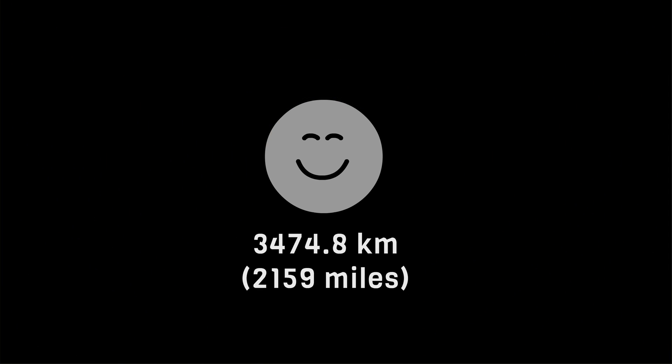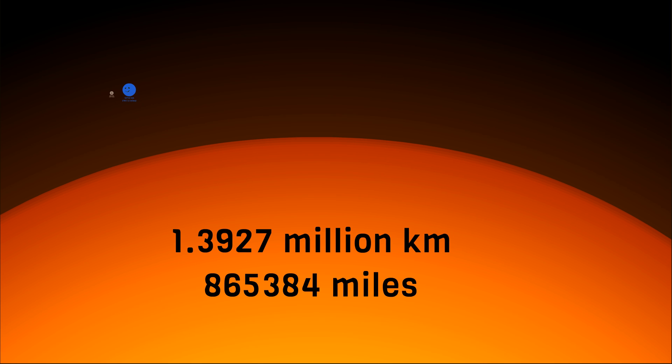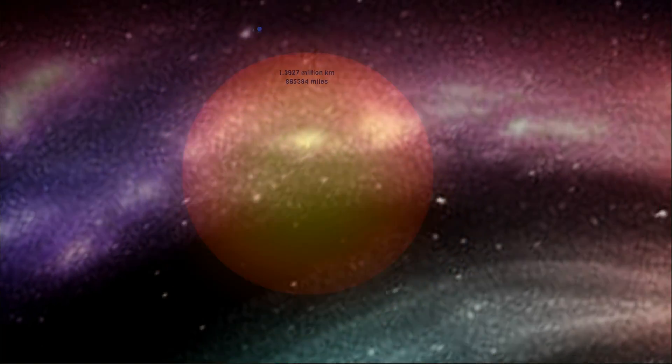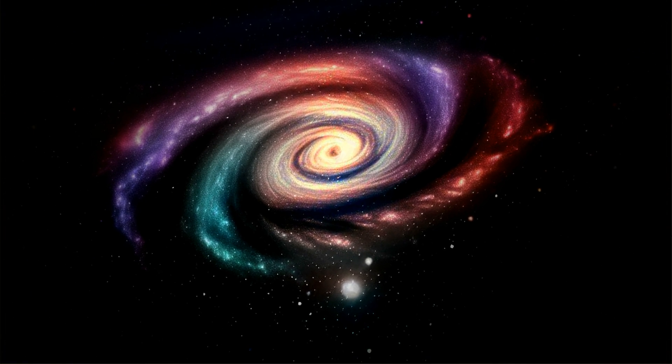The Moon has a diameter of 3,474.8 km. Earth has 12,742 km of diameter, and the Sun has 1.3927 million km of diameter. Our Sun is just one of approximately 100 million stars in our galaxy, the Milky Way. Moving on to the next question.